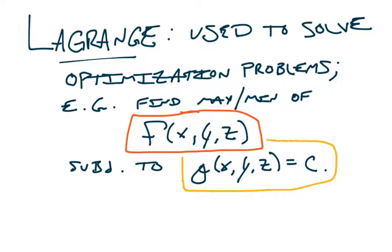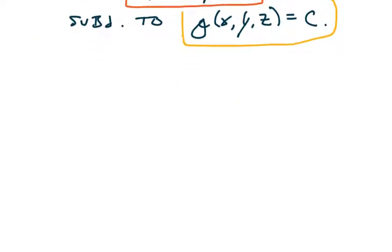The constraint, in this case, is what we're calling g of x, y, and z, set equal to some constant value c. The main idea behind Lagrange multipliers is finding where certain level curves are tangent to one another. All these points of tangency are the feasible places where a maximum or minimum of the original function f might occur.